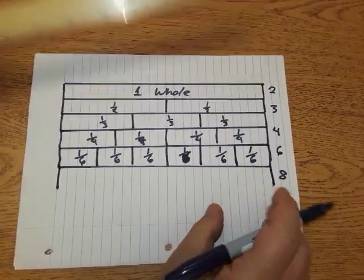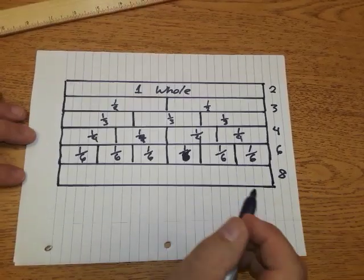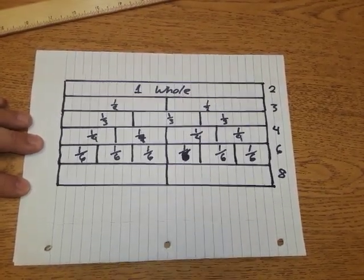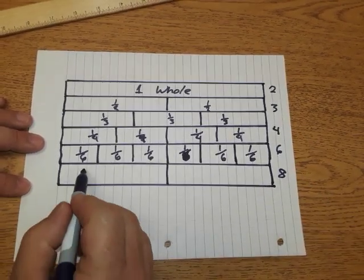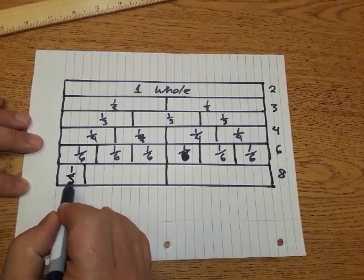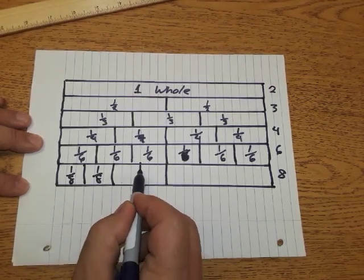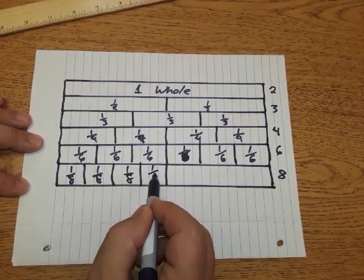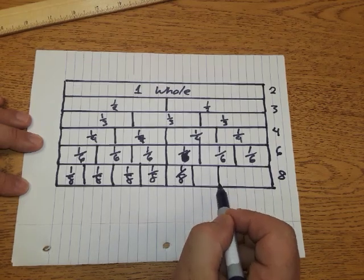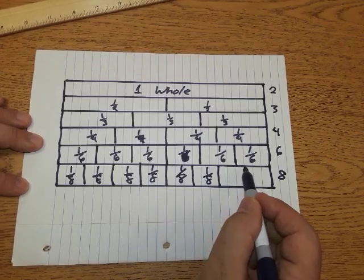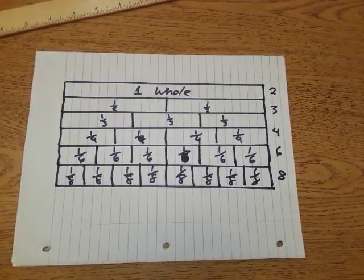The last fraction I'm gonna represent with the strip diagram are eighths. Eighths is an even number, so one is gonna be equal to a half. We already said that 24 divided by 3 is 8, so 24 divided by 8 would be 3. I count over three for each eighth: that's one eighth, that's an eighth, there's another eighth, my fourth eighth, and that's my eighth eighth right there, which equals one whole.